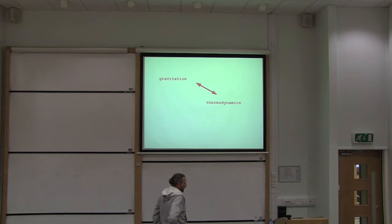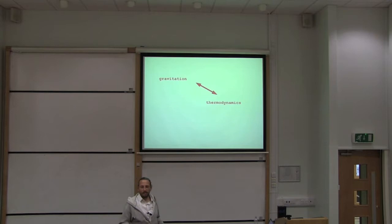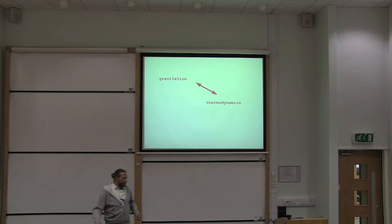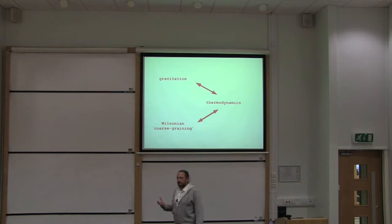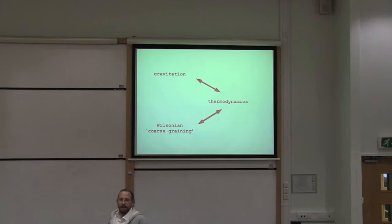When you speak about thermodynamics, you may think of properties of a gas — we speak not about each individual particle in the gas, but rather macroscopic properties such as average energy, temperature, and pressure. So you're immediately reminded of the notion of coarse graining underlying thermodynamics. Now, if there is a link between thermodynamics and gravitation, surely there must be a link between this notion of coarse graining and what is going on in gravity.